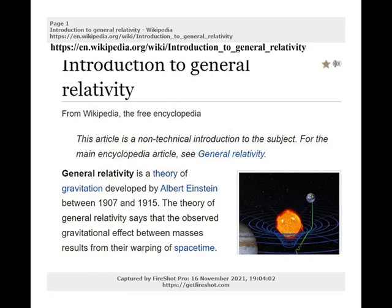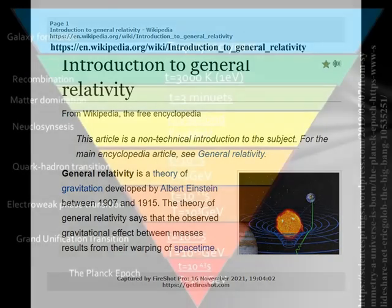A side note: General relativity, in its simplest description, is a theory of gravitation developed by Albert Einstein between 1907 and 1915. It says that the observed gravitational effect between masses results from their warping of space-time. So, this quantum singularity indicates that general relativity is not a sufficient description of the laws of physics at this time scale. In other words, models based solely on general relativity cannot extrapolate toward the singularity beyond the end of the Planck Epoch.